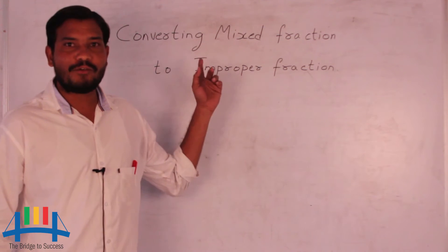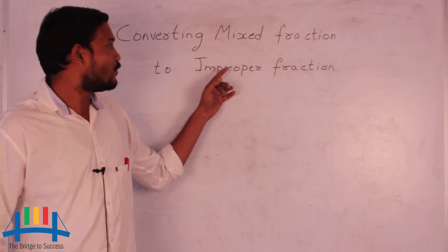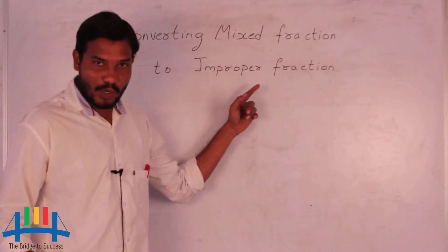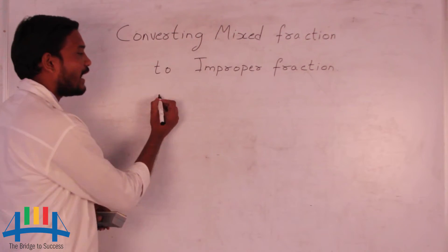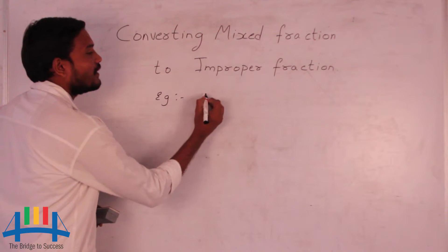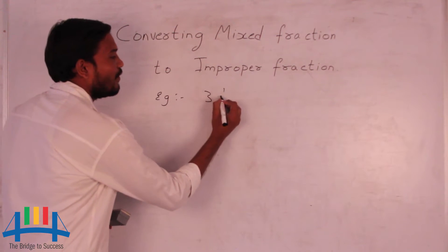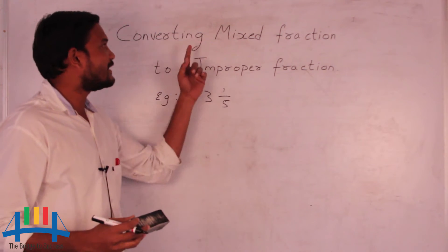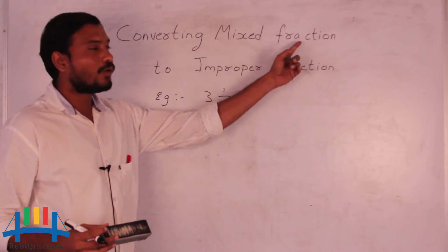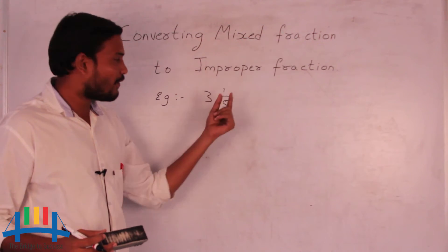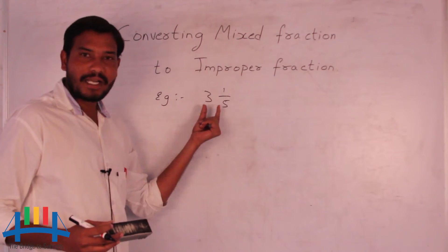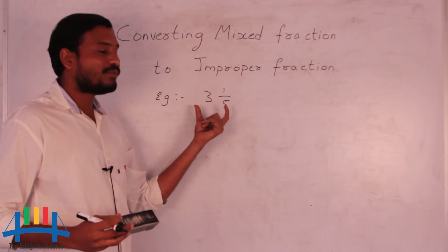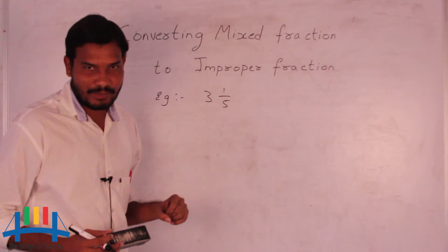Now I will explain how to convert mixed fractions to improper fractions. To explain this, I will consider one example: 3 and 1 by 5. This is an example of a mixed fraction, which contains one whole part and one fractional part. I will now explain how to convert this mixed fraction into an improper fraction.